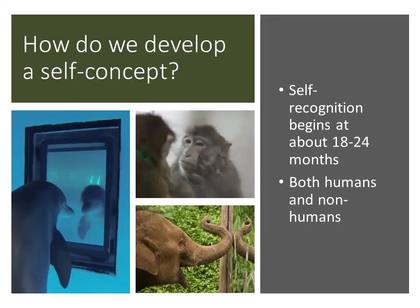One of the first building blocks of the self-concept is self-recognition. Once we recognize ourselves, we can start associating beliefs with what we recognize. One form of self-recognition develops at about 18 to 24 months of age when human babies begin to recognize themselves in a mirror. Researchers place a dot on their forehead and sit them in front of a mirror — toddlers will touch their forehead, a sign that they realize the dot is on their own forehead. But babies less than a year old don't make a move; even though they felt the dot being applied, when they look in the mirror, they don't touch the dot.